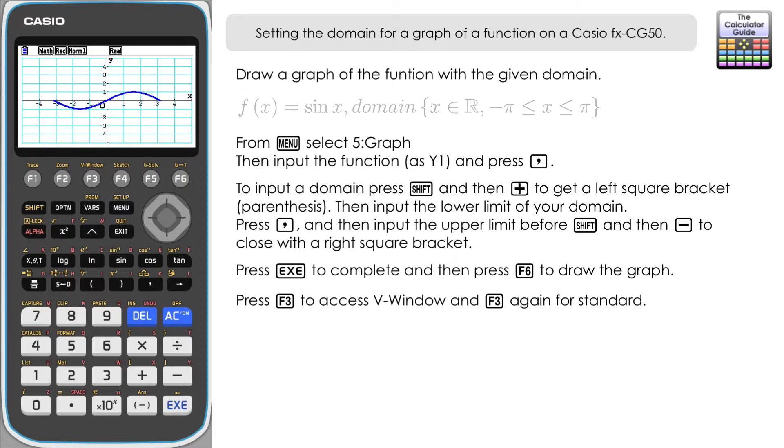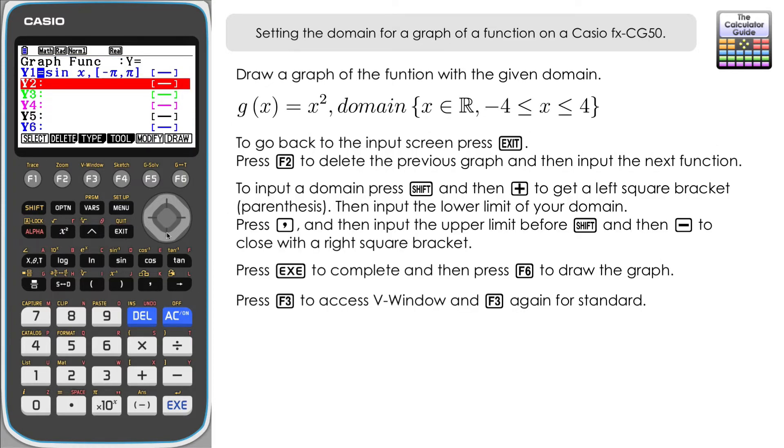Right let's go back and have a look at a second example. So it's exit. I'm just going to delete the first one off so we've only got one graph on screen at this time. Let's just delete that and then the second example that we have here g(x) equals x squared. Input x squared comma now we're going to define the domain shift and square left bracket then it's minus 4 negative 4 comma